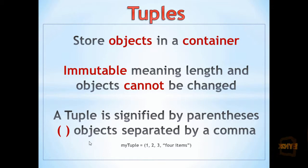A tuple is signified by parentheses, the circular brackets, and items inside of them are separated by a comma. They can store numbers and strings.